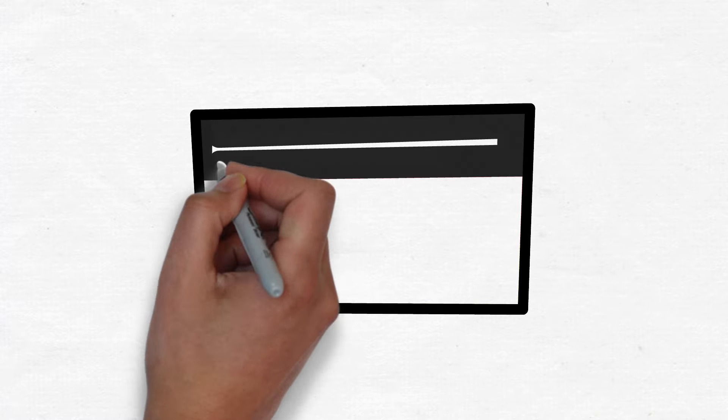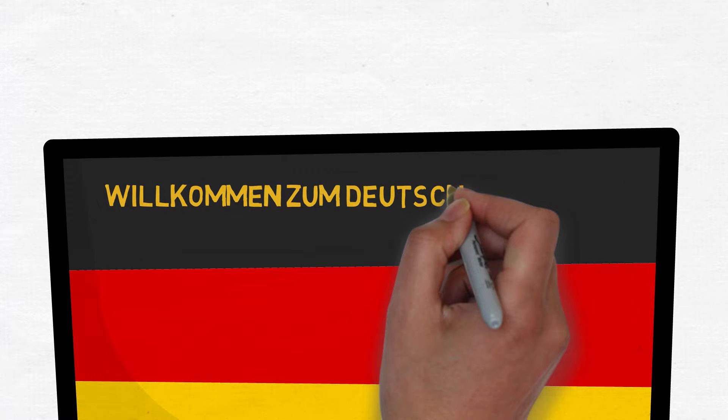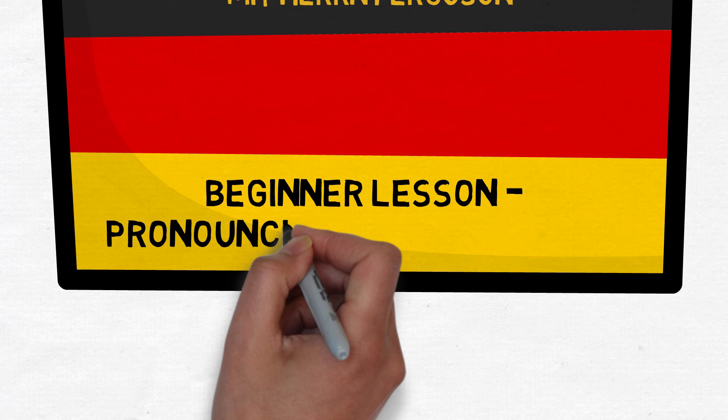Hello and welcome to German Lessons with Mr. Ferguson. Hallo und herzlich willkommen zum Deutschunterricht mit Herrn Ferguson. Diese Stunde für Anfänger — this lesson for beginners — heißt Wie man die deutschen Vokale ausspricht: How to pronounce the German vowels.